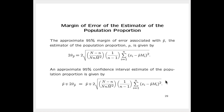Once we have the estimated standard error of p-hat, we multiply it by 2 to get the approximate 95% margin of error. Then, combining the point estimator and the margin of error, we construct the confidence limits as usual. The bottom of slide 29 gives the formula for the approximate 95% confidence interval estimate for the population proportion p.